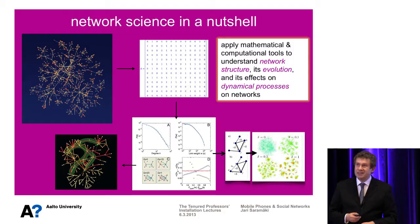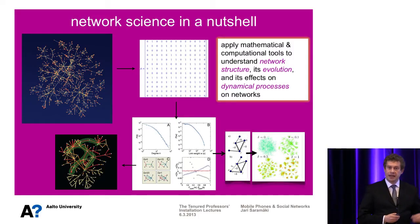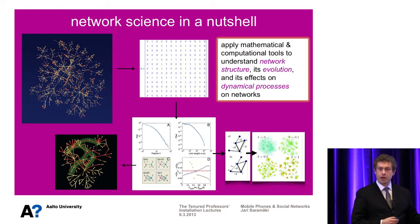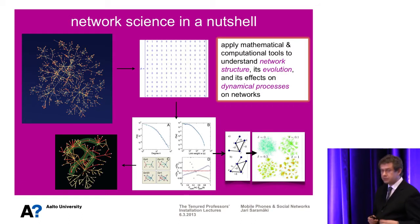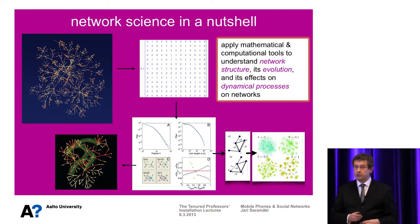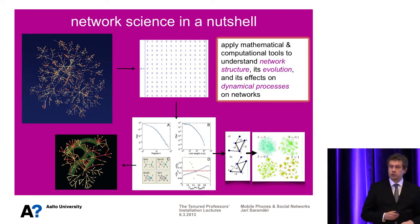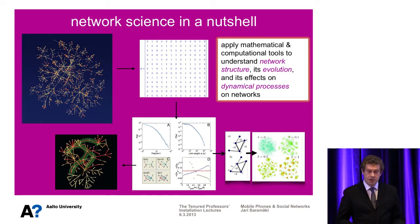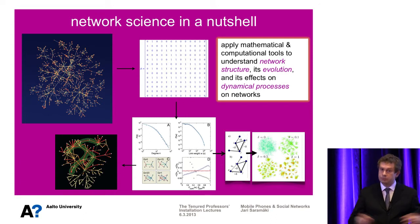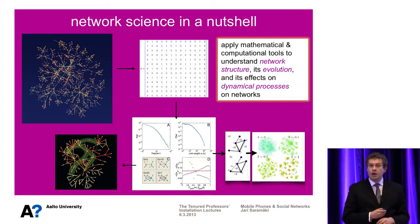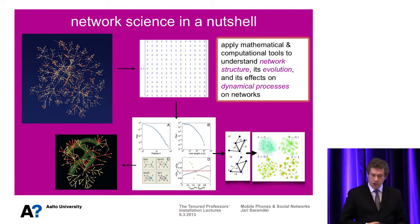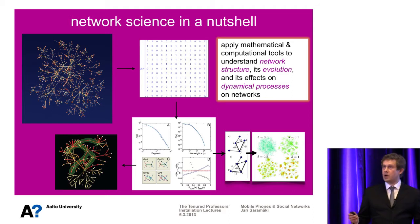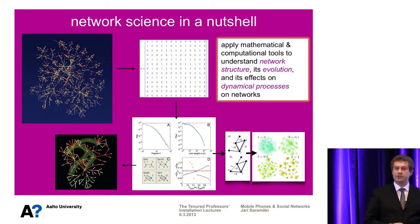So how does one study networks? Basically, once you have the blueprint of a network, that's just a bunch of numbers. You can crunch these numbers with the help of a computer and some mathematical tools, in order to understand network structure — like how are people connected to all the other people — the evolution of networks, the driving processes behind network formation, and also the effects of network structure on dynamical processes that live on top of networks.